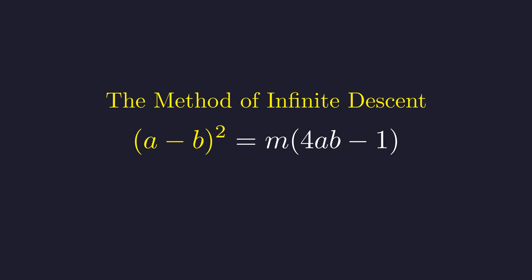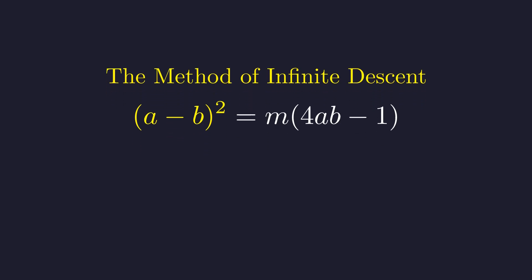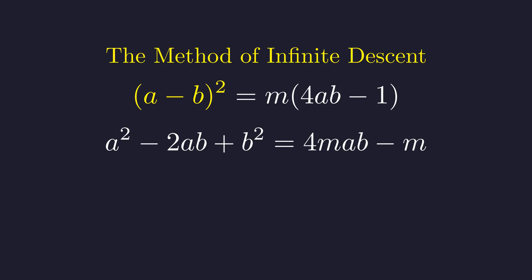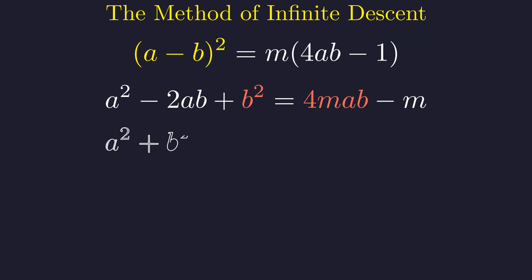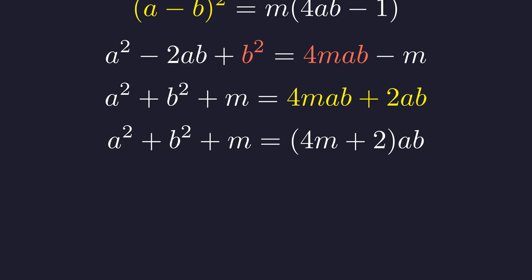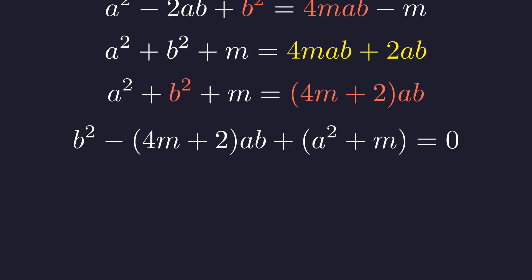First, we expand the squared term to rearrange the equation. Expanding the square is the first step toward restructuring this as a quadratic equation. Our strategy is to treat this as a quadratic equation in the variable B. We group terms to facilitate this structure. Factoring the right side will complete the rearrangement. Factoring out A times B yields this form. Now, we write this in the standard form for a quadratic equation in B.